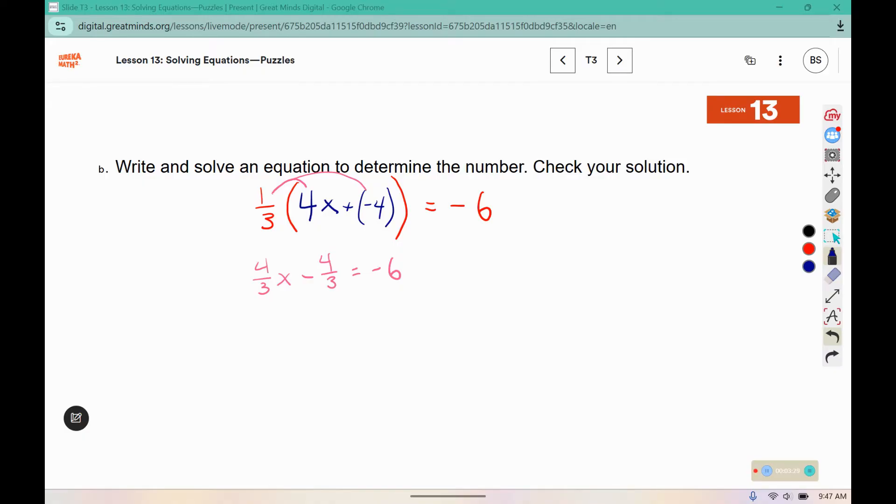Now, in my class we do something that's called fraction busting. I don't know what the technical mathematical term for it is, but that's just what my middle school teacher called it, so that's what we call it in my class as well. So to fraction bust, you multiply by a common denominator, which in this case is 3, and you multiply the whole equation by 3 just to eliminate the fraction piece, because fractions aren't as simple to work with as whole numbers.